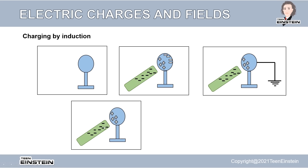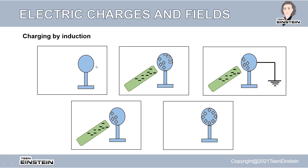Now we are left with a metal ball full of positive charge and the glass rod. When we remove the glass rod, the positive charges get equally distributed over the surface of the metal sphere. We started with a neutral metal sphere and, by using the fact that a charged object attracts opposite charges from a neutral object and that earth absorbs excess charges, we obtained a perfectly charged metal sphere.